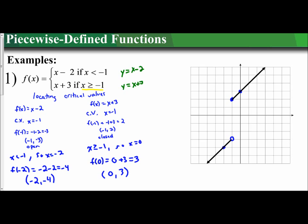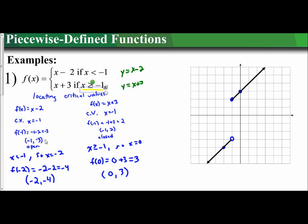We can see our first piecewise defined function. It is a function — drawing a vertical line anywhere through the graph intersects it once. There's an open circle at one location and a closed circle at the other, confirming it intersects at only one point at that position. This example applies critical values: use the conditions and boundaries to pick a starting point, determine open or closed circles, then pick one more x value that satisfies the boundary and plug it in.